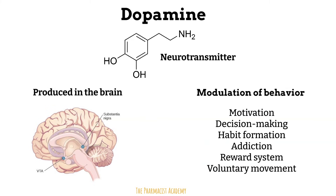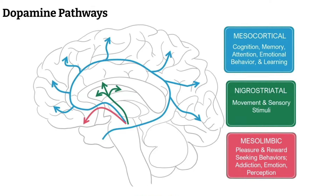Voluntary movement: dopamine regulates movements, and imbalances in dopamine levels — like we see in Parkinson's disease, where there's a decrease in dopamine in certain parts of the brain — can affect movement. Dopamine is usually released from areas where it's produced and then travels to another area to do its job. Neurons carry the dopamine to the required areas — we refer to this as dopamine pathways. Each pathway is responsible for a set of dopamine functions like we previously discussed.